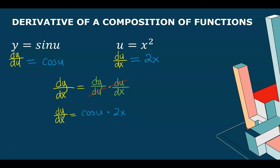We don't expect to see cos(u) in the final answer — we need to replace u. Since u = x², we substitute to get dy/dx = cos(x²) · 2x. So the derivative of sin(x²) is cos(x²) times 2x.